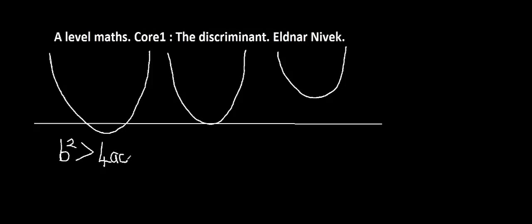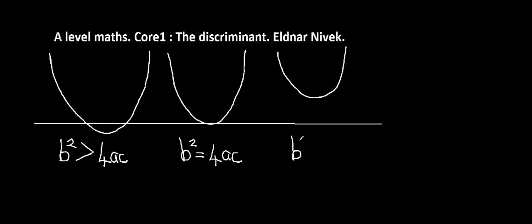Now if b squared is greater than 4ac, we get two solutions. If b squared is equal to 4ac, we get one solution, as you can see in that curve there. If b squared is less than 4ac, we get no solutions.